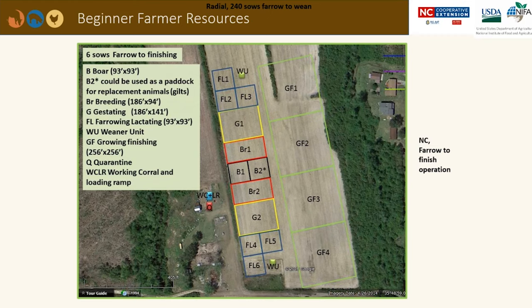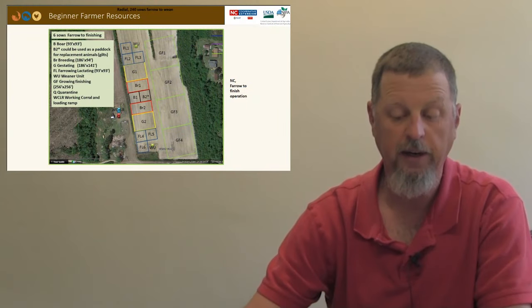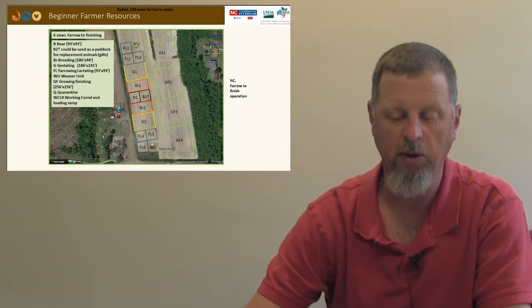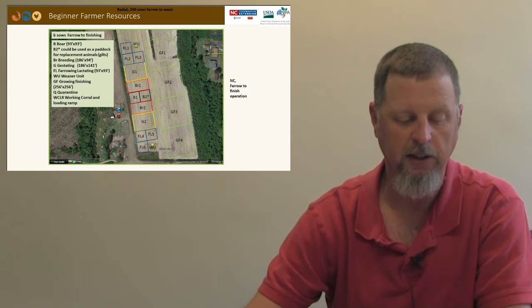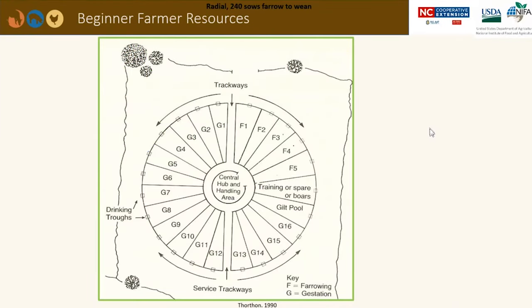A well thought out paddock layout helps improve efficiency, allows easy transportation of feed, water distribution, and movement of stock, as well as saving time for the operations. Layout will vary according to production system, your herd, soil type, the topography, and the amount of land available. Radial layouts tend to fit better on larger tracts of land, and for small areas, square or rectangular paddocks work well. Here is an example of a six-cell farrow to finishing operation in North Carolina, and year-round access for vehicles and machinery needs to be considered.